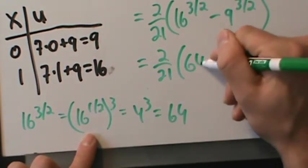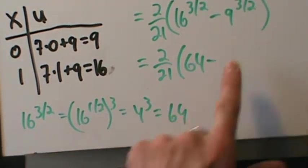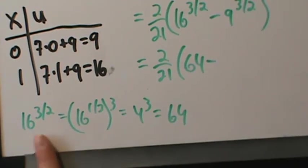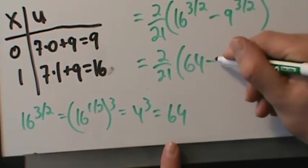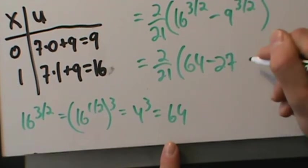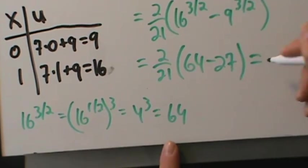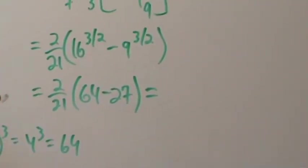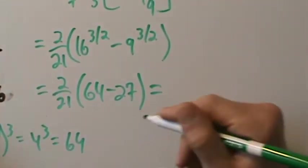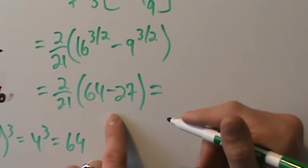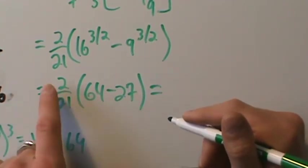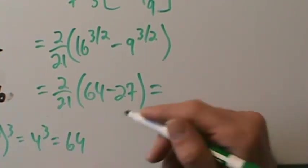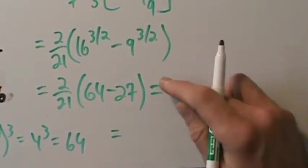9^(3/2) = (9^(1/2))^3. 9^(1/2) = 3, and 3^3 = 27. So we have 64 − 27 = 37. And 37 × 2 = 74.